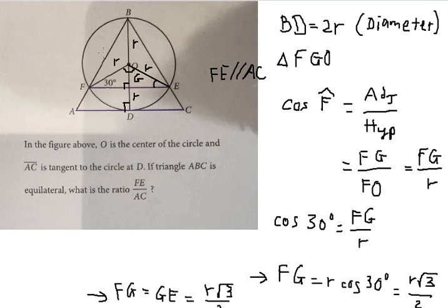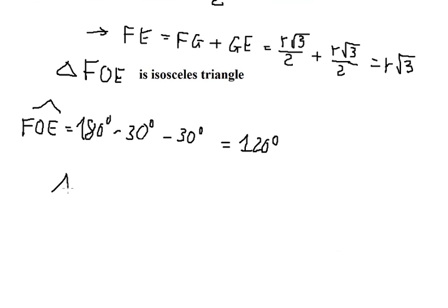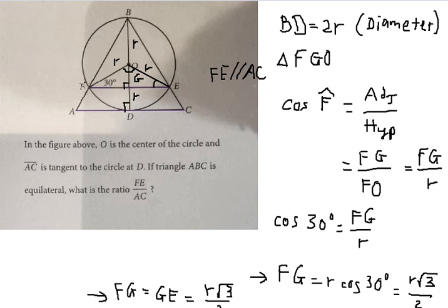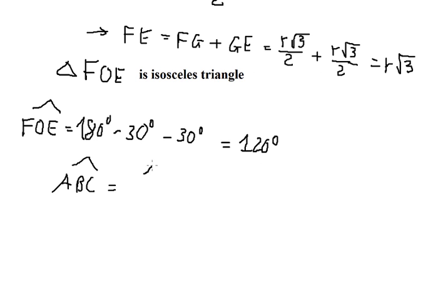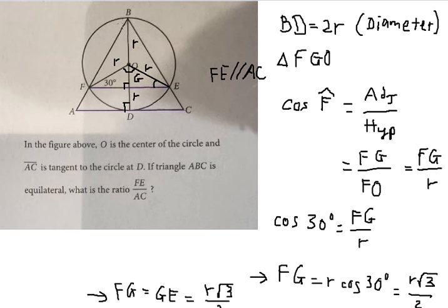Next, we can find angle ABC. We know that angle ABC corresponds to angle FBE — they subtend the same arc. The arc FE corresponds to the central angle FOE which is 120 degrees, so the inscribed angle FBE should be 120 degrees divided by 2, which gives 60 degrees.